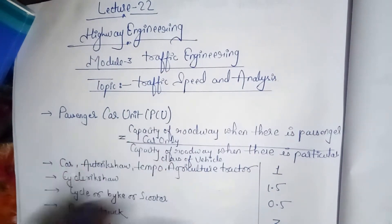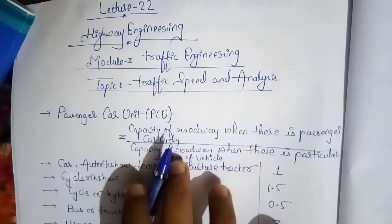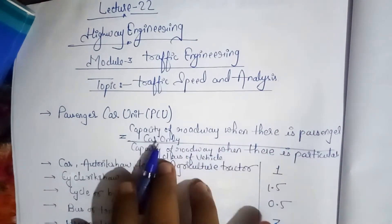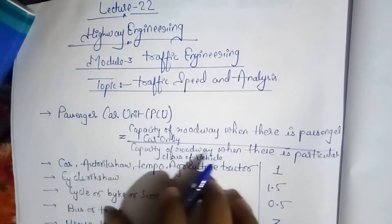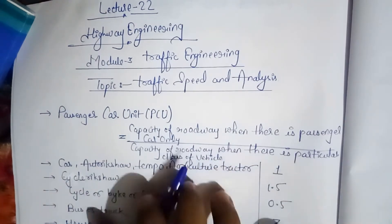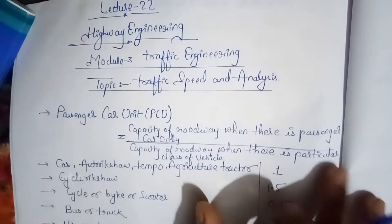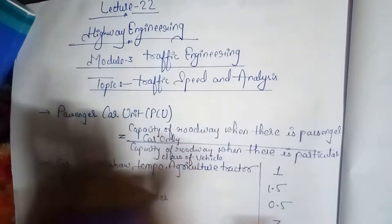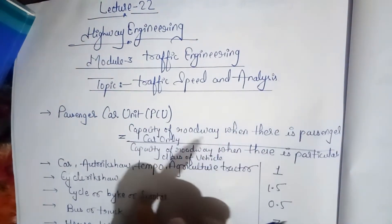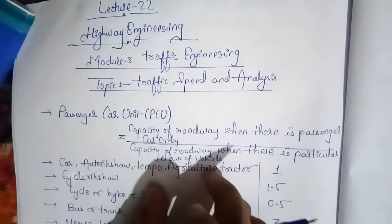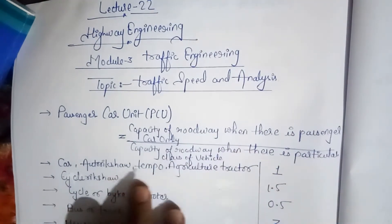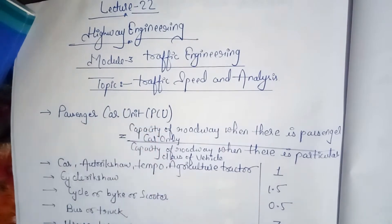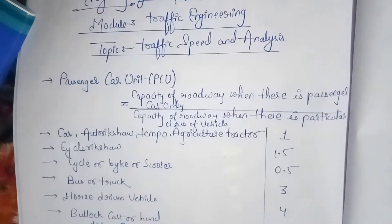Passenger car unit is the ratio of the capacity of a roadway when there is a passenger car only, to the capacity of a roadway when there is a particular class of vehicle. So this ratio is the passenger car unit.